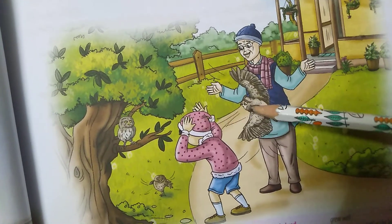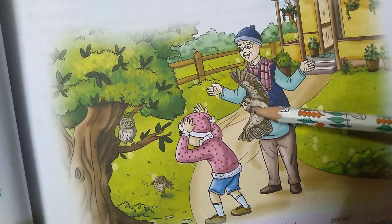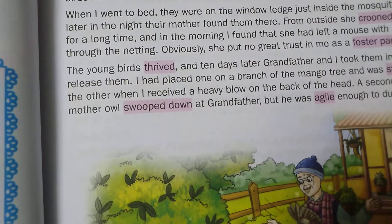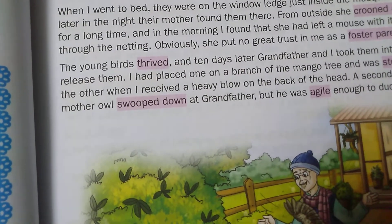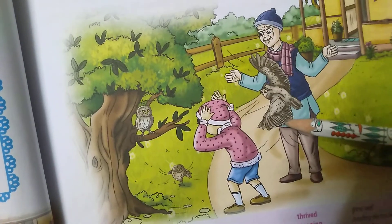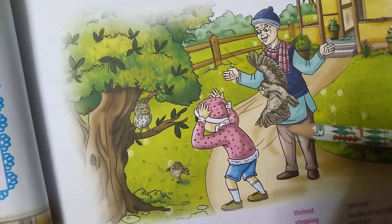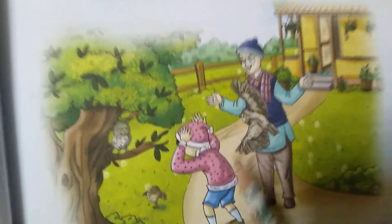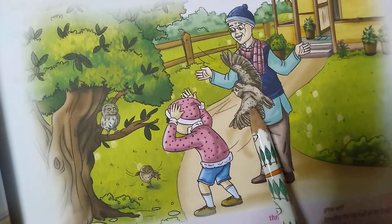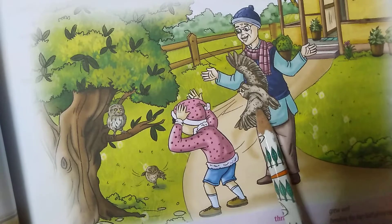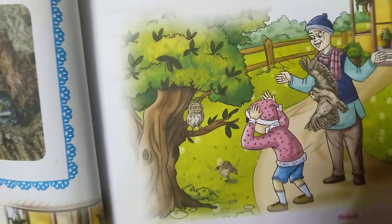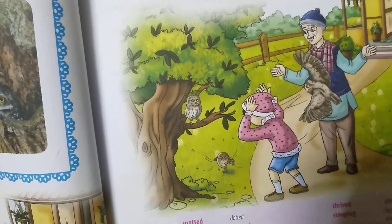A second or two later, the mother owl swooped down. 'Swoop down' means to move very quickly and easily through the air, especially from a height, in order to attack. The mother owl attacked. But grandfather was agile enough — 'agile' means able to move the body quickly and easily — to duck out of the way.